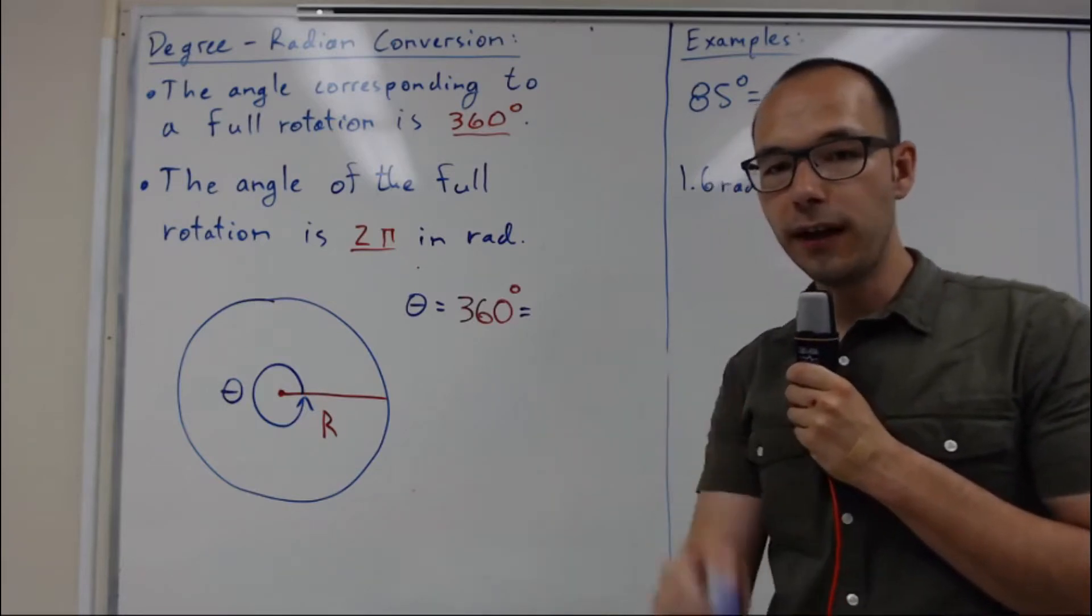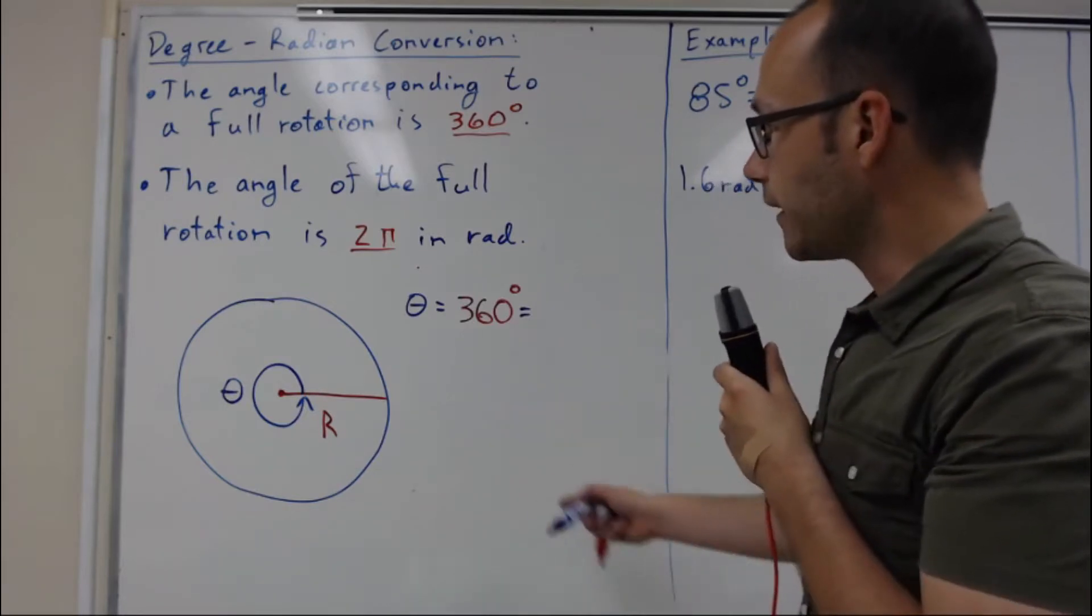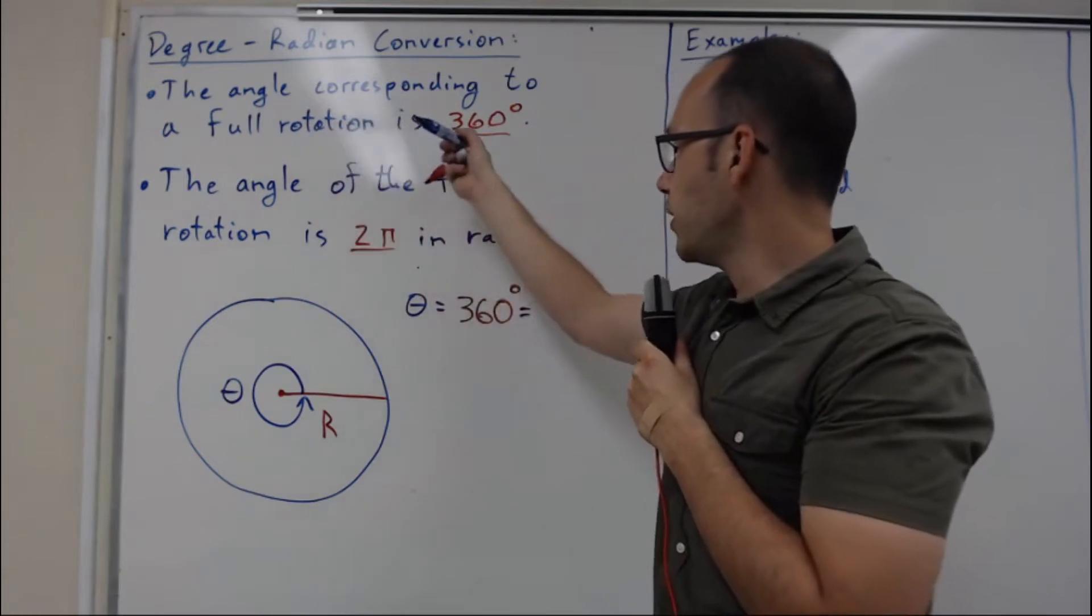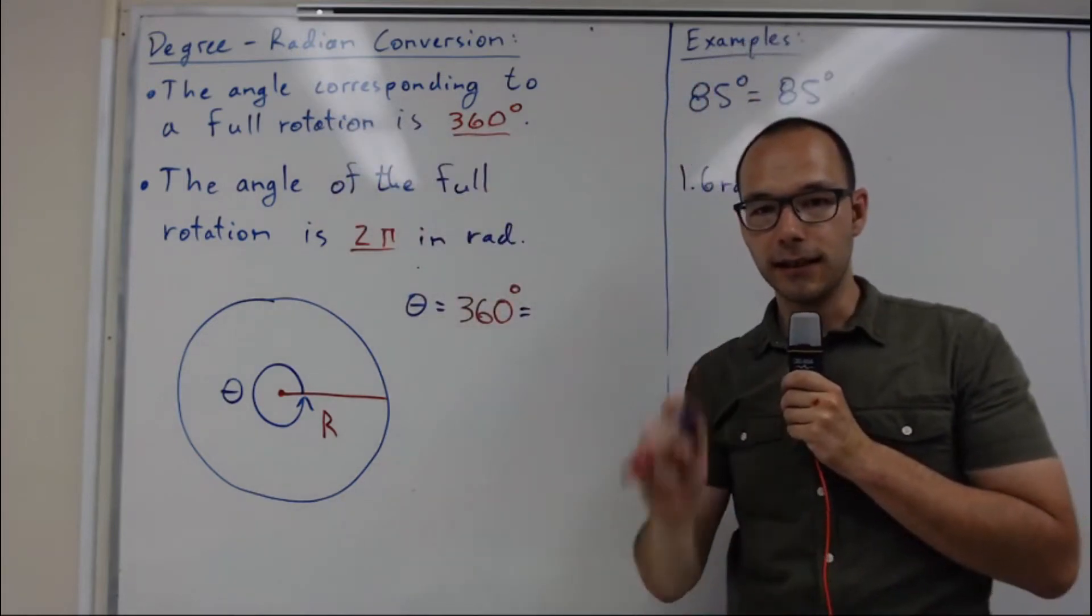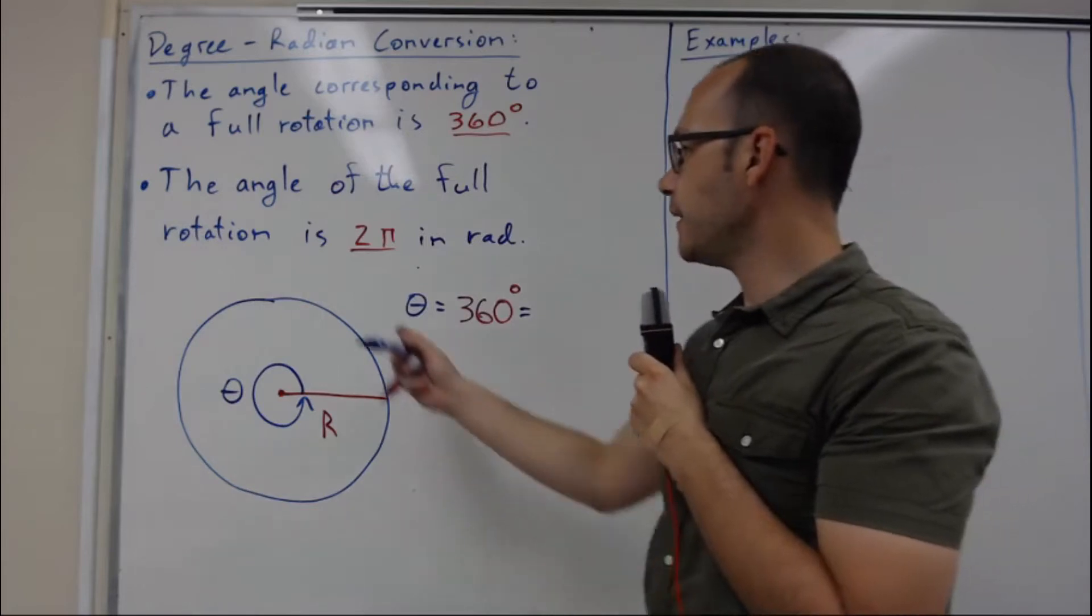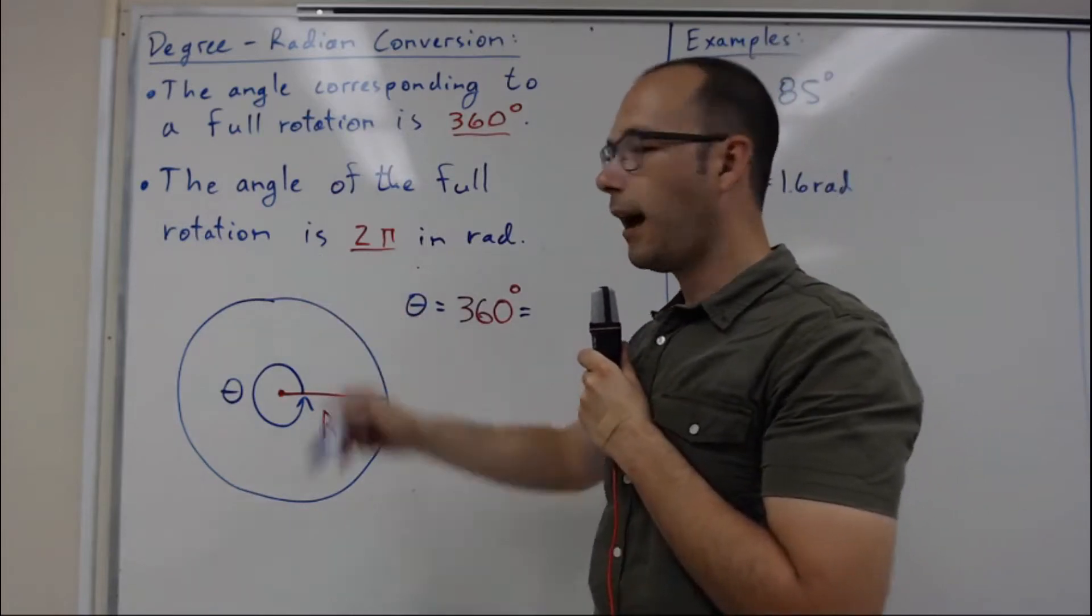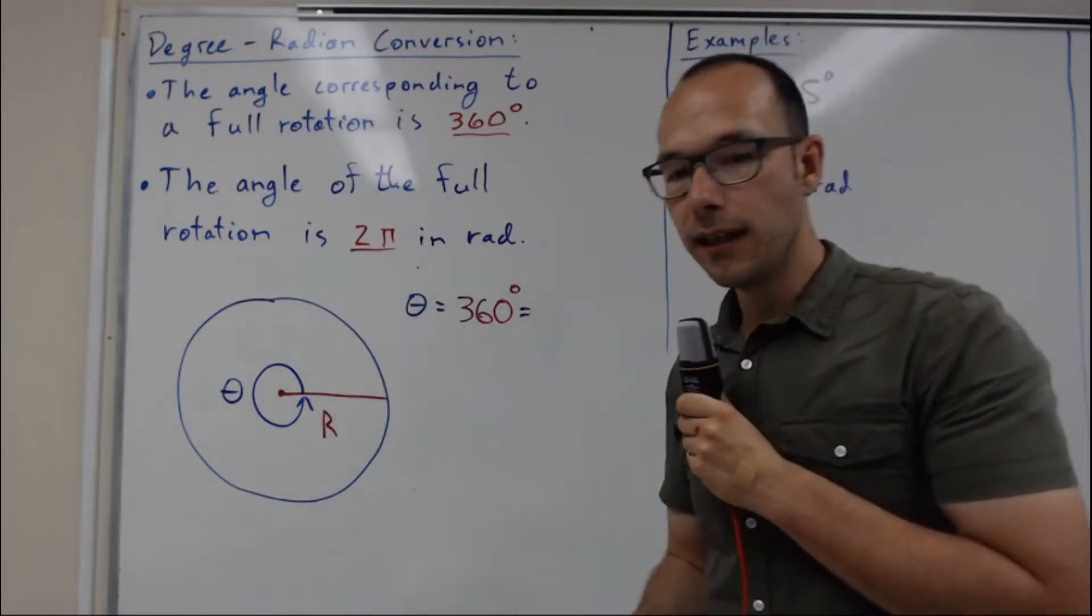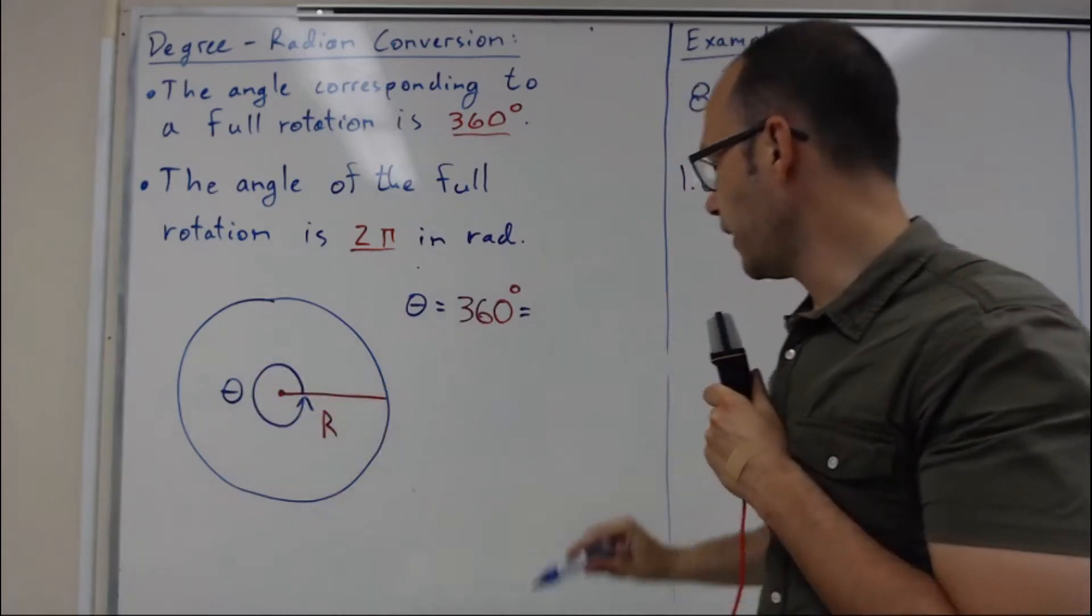To find the conversion factor, I'm going to use the fact that a full rotation is 360 degrees, and in radians it's 2π. This means the full rotation angle is 360 degrees, which is also 2π radians.